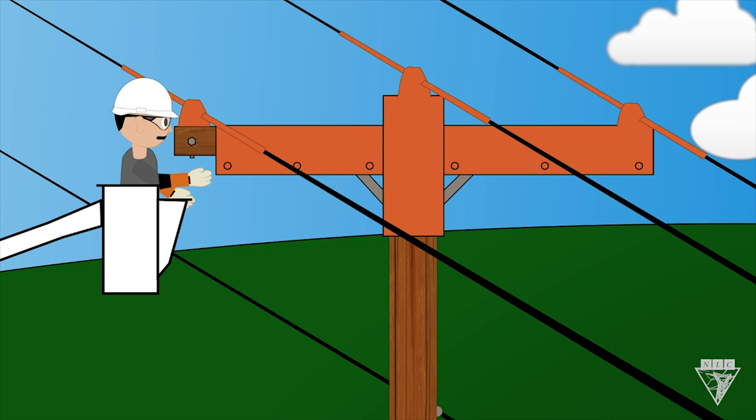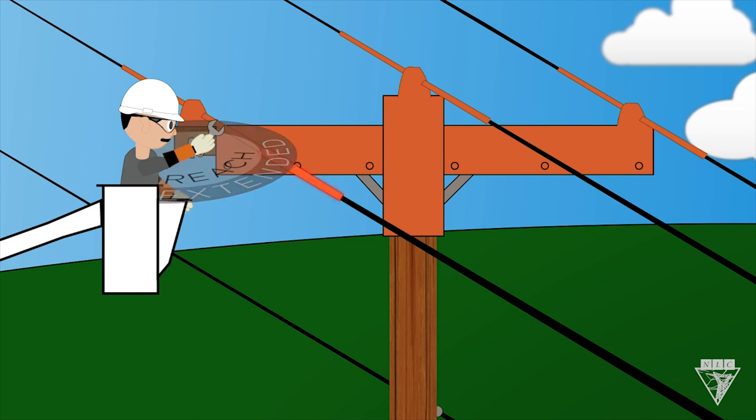When applying cover-up, be aware of extended reach. In this situation, the worker has adequate cover-up because as he reaches out, he can't contact the exposed phase. But if he has a wrench in his hand, he's within reach and must apply additional cover-up.